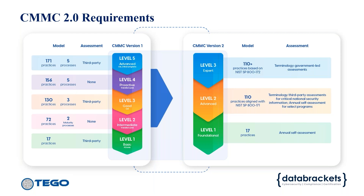For Level 2, there is an option for some organizations — based on the type of CUI they handle — to do a self-assessment, similar to what you're doing now with SPRS reporting, without necessarily involving the C3PAO for certification. However, I don't see a strong case to differentiate those allowed to do just self-assessment. If you have CUI in your environment, you're going to want to engage and set up the assessment with a C3PAO and get working on those requirements now.